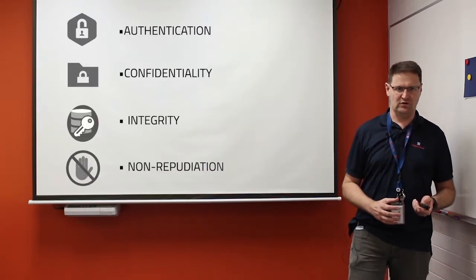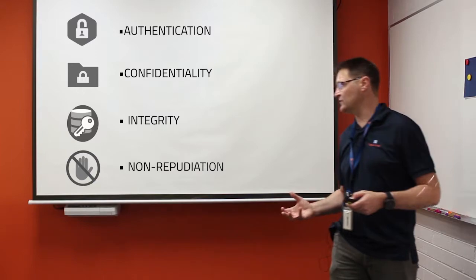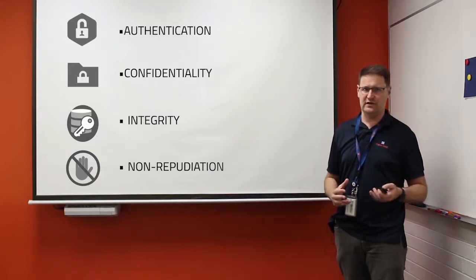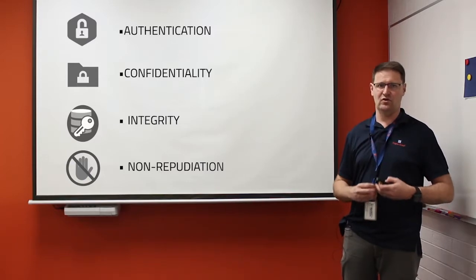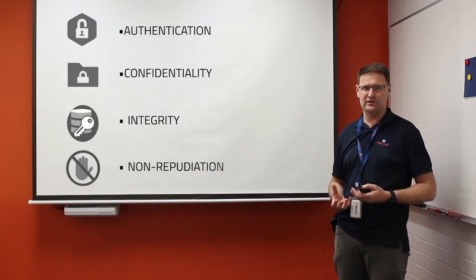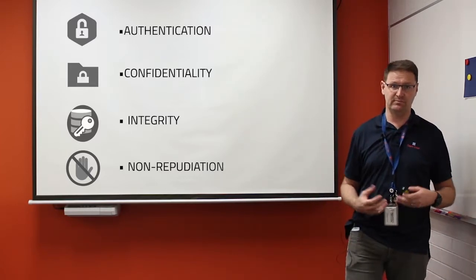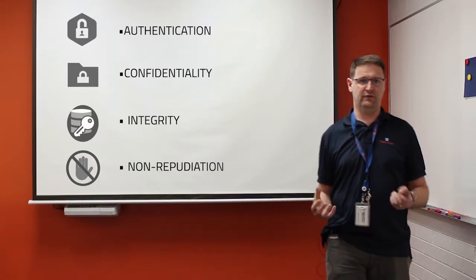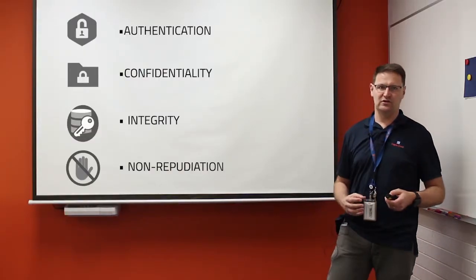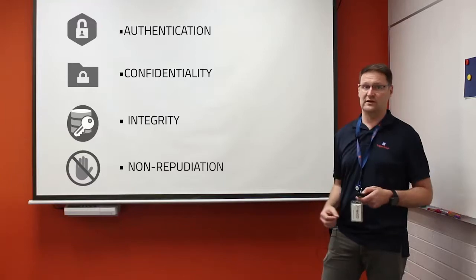PKI has four cornerstones it's trying to achieve. The first is authentication — about an individual, identity, or even a device actually authenticating who they are, purporting to be somebody and having something trust that. The second is confidentiality, which is basically encryption — creating obfuscation of information. Integrity is about ensuring something doesn't change, and non-repudiation is about ensuring that a person or device that sends something can't deny they sent it.